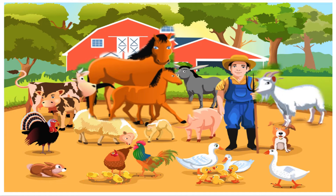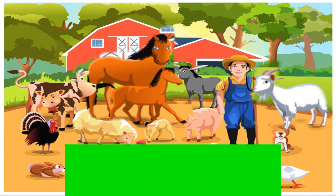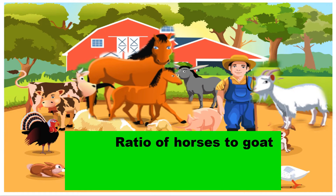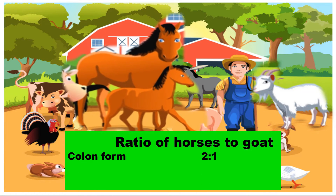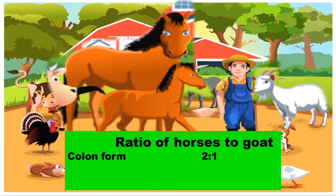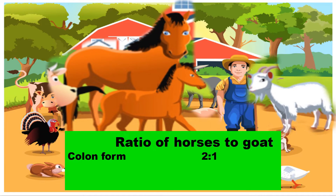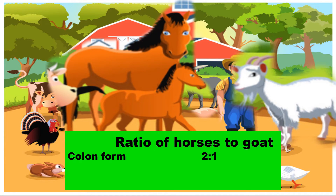To answer our first question, the ratio of horses to goats is 2 is to 1. This means that there are two horses to one goat. We can also express our answer in fraction form — it is two over one.